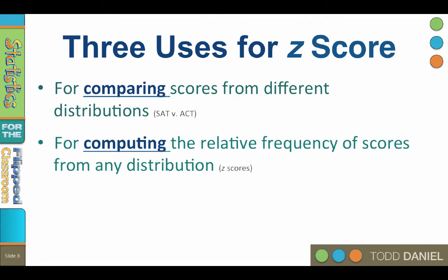The second use for z-scores is for computing the relative frequencies of scores from any distribution. How many people scored 32 or less on the ACT? Using a z-table, I can determine that 98.6% of other test takers scored below your score.